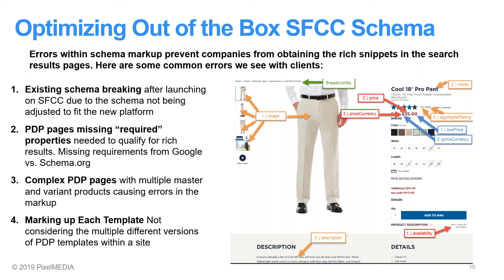Number three: complex PDP pages. Not all PDP pages are created equally. Some are simple and have one variation master, and some have many different product variations. You can see here in the screenshot from Hager, the Cool 18 Pro pant can be refined by color, waist, and length. Each of these refinements has its own unique SKU and product ID. We recommend marking up each of those variants in order to provide Google with the best and most accurate information. This can often cause errors, so since you're marking up a large amount of variants, you need to be careful to separate these variants by offering a different SKU or product ID.